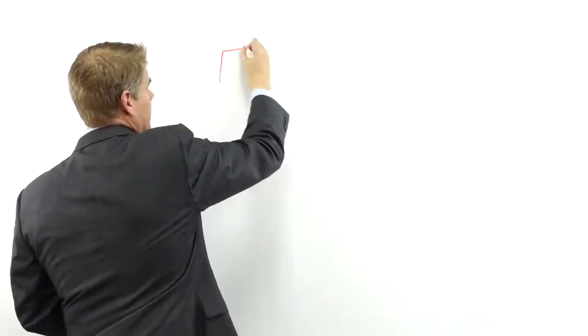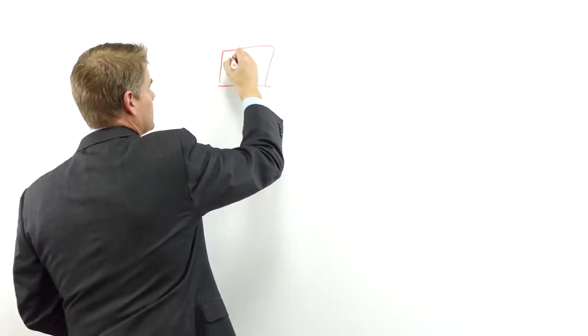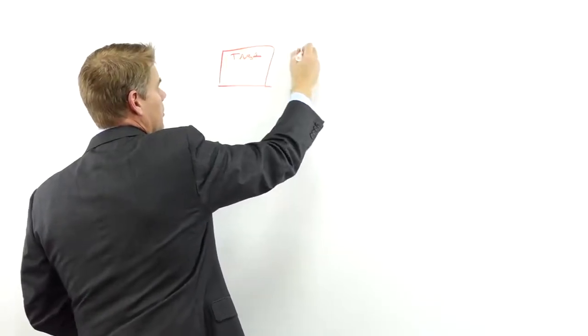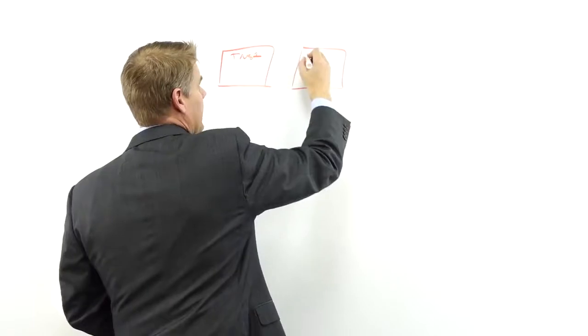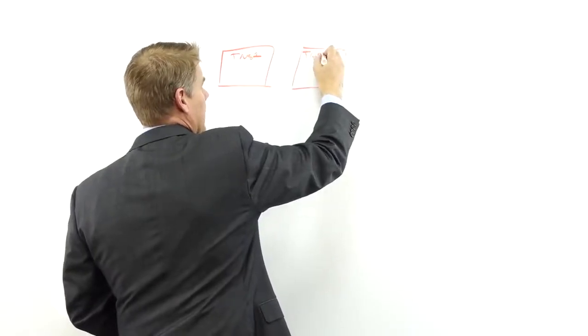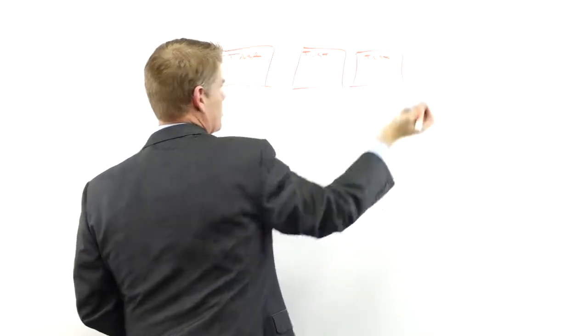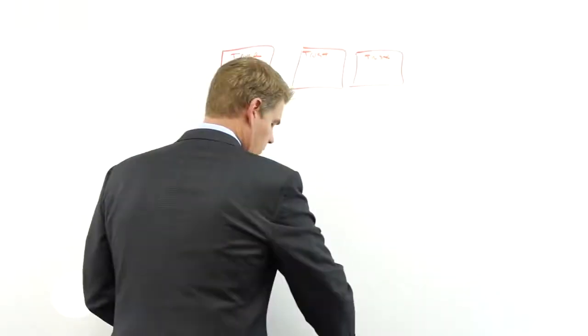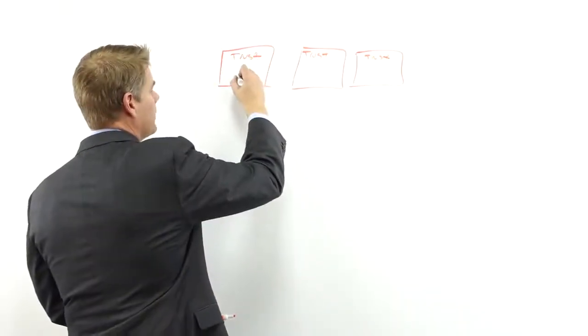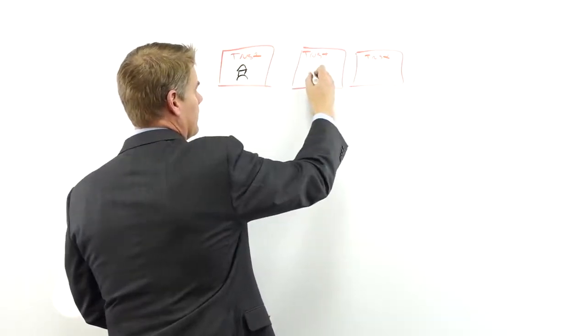So what I like to do is create one trust per property. If you had five pieces of property, I would create five trusts for you, just like this. So I'm just going to stop at three.